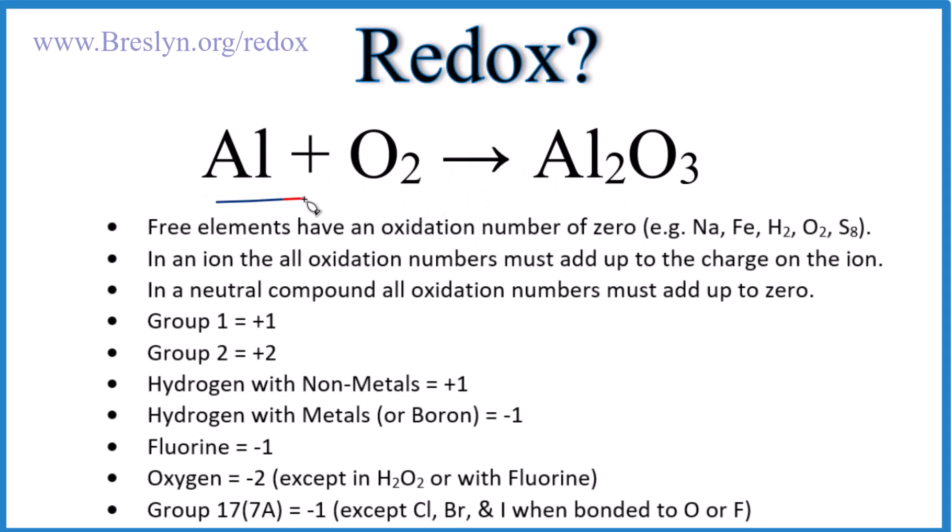Let's take a look at whether Al plus O2 yields Al2O3 is a redox reaction or not. And here's how we do it. So we have these rules here. We assign oxidation numbers to each element, and using those we can figure out whether we have a redox reaction.